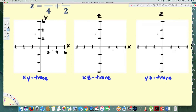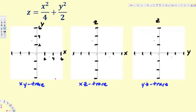Let's see how we can draw the traces. First, let's start with the XY trace. For the XY trace, we equate z equal to zero, and we get zero equals x squared over four plus y squared over two. This looks similar to an ellipse shape, but since we have zero here, this is actually just the origin.